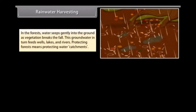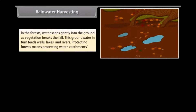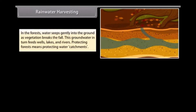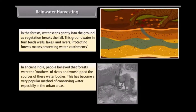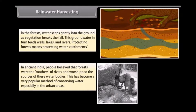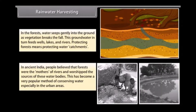In forests, water seeps gently into the ground as vegetation breaks its fall. This groundwater in turn feeds wells, lakes, and rivers, so protecting forests means protecting water catchments. In ancient India, people believed that forests were the mothers of rivers and worshipped the sources of these water bodies. Rainwater harvesting has become a very popular method of conserving water, especially in urban areas.